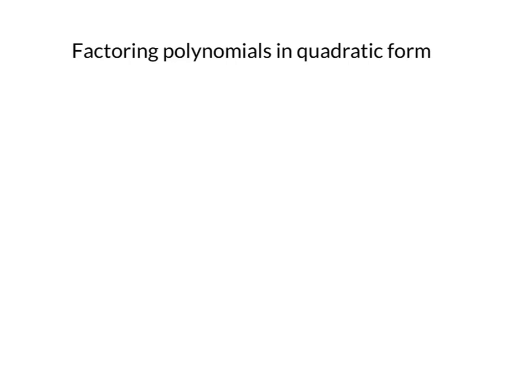We are going to factor polynomials in quadratic form. Let's remember what we mean by a quadratic — something like x squared plus 7x plus 10. We want to know what two numbers multiply to 10 and add to 7. We get x plus 5 and x plus 2, since those give us 10 when multiplied and 7 when added.